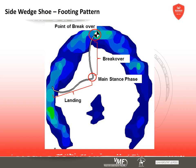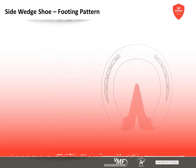The footing pattern is formed from several steady steps averaged into one picture showing the migration of the centre of force during the main stance phase — including the footing, movement during the main stance phase, the unrollment, and the point of break over. Side wedge shoes are often applied to influence the landing in horses that show a distinct unilateral initial contact with the ground, with the intention of optimising the landing process and creating a more even footing to reduce shock and pressure peaks during initial contact.